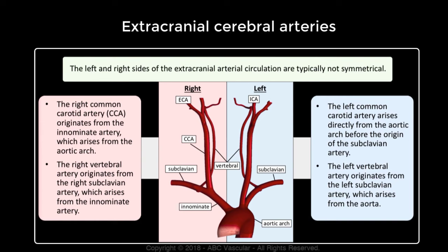The cerebral vascular system is fed by three main supra-aortic vessels, which are on the right the innominate artery, on the left the common carotid artery, and the subclavian artery. The innominate artery divides into the common carotid artery, which branches into the internal carotid artery and the external carotid artery. The right subclavian artery arises off the innominate artery and gives off the vertebral artery.